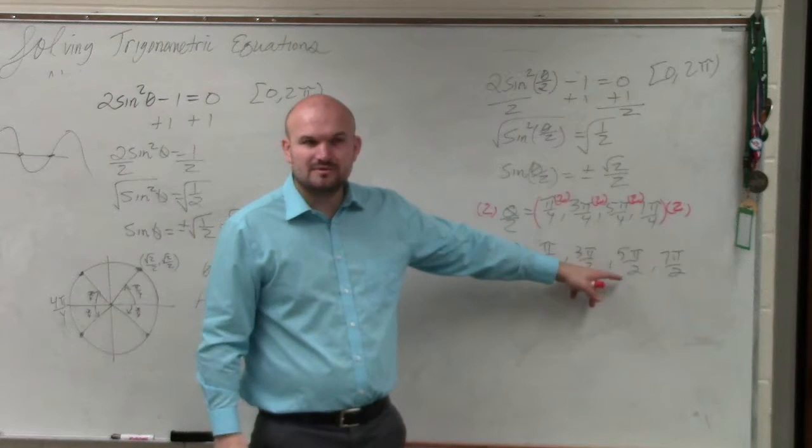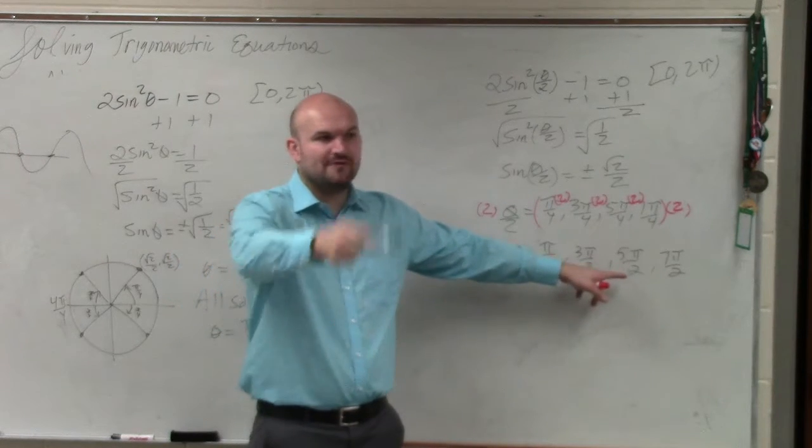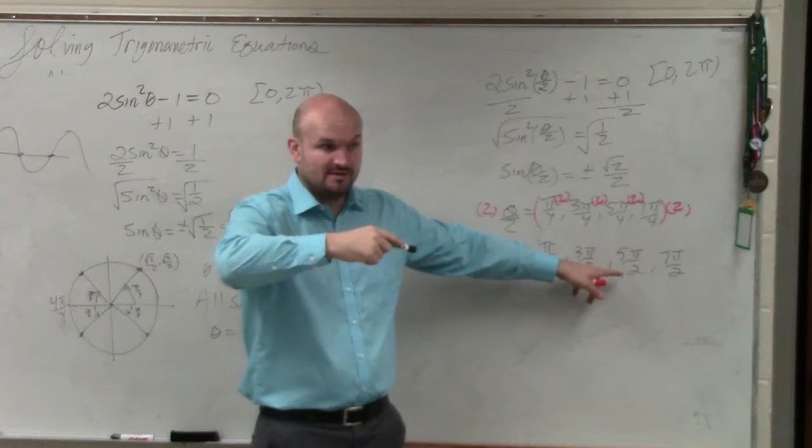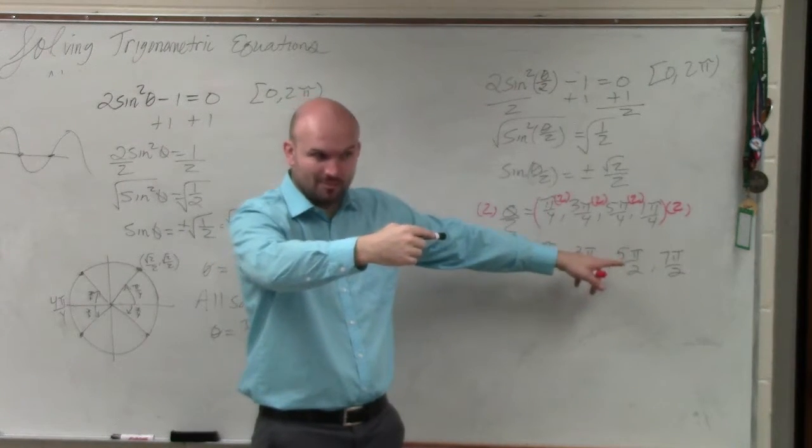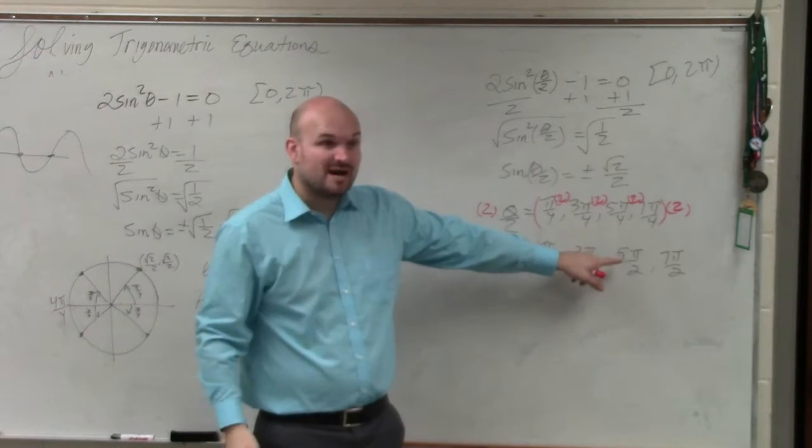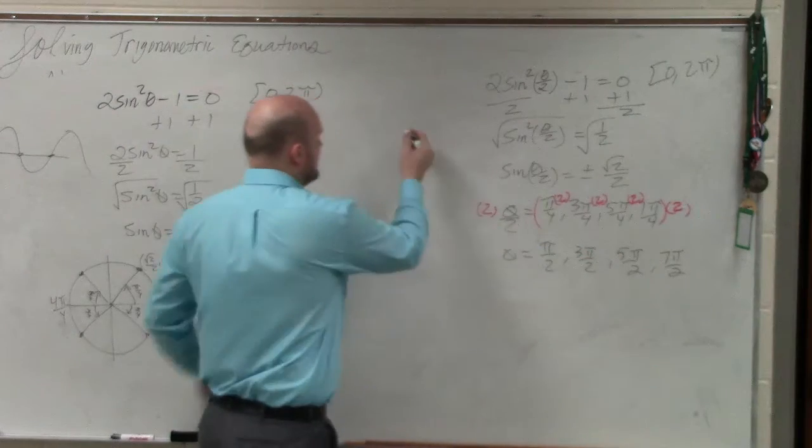5 pi halves, though. Think about it. What's all the way around the circle is 2 pi over 2, right? That'd be 4 pi. All the way around the circle would be 2 pi, which is equivalent to 4 pi over 2. So 5 pi over 2 is too big. Or, if you want to look at the unit circle,